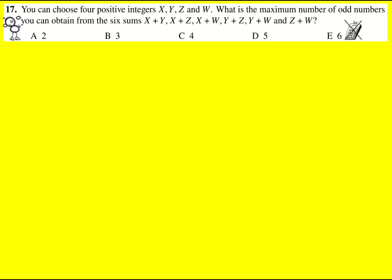We have four positive integers and we're trying to maximize the amount of odd numbers when we add all the different pairs.